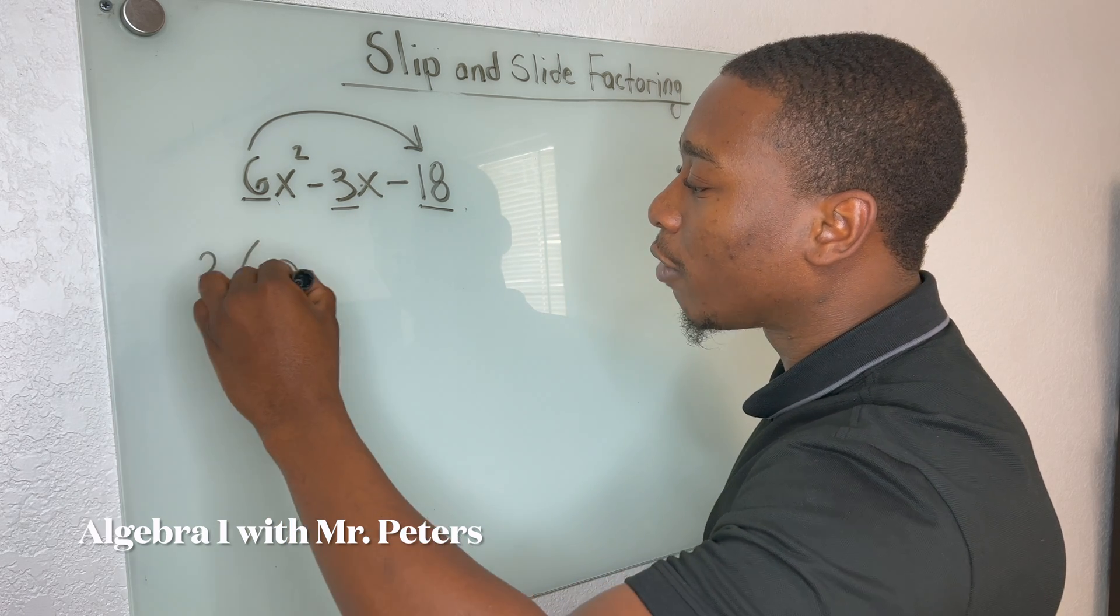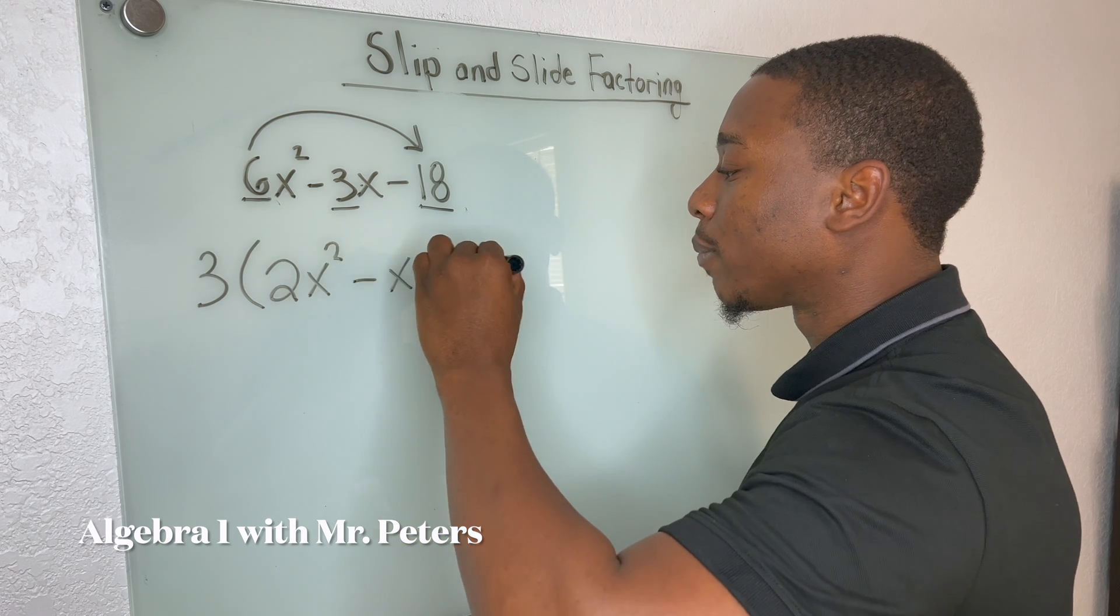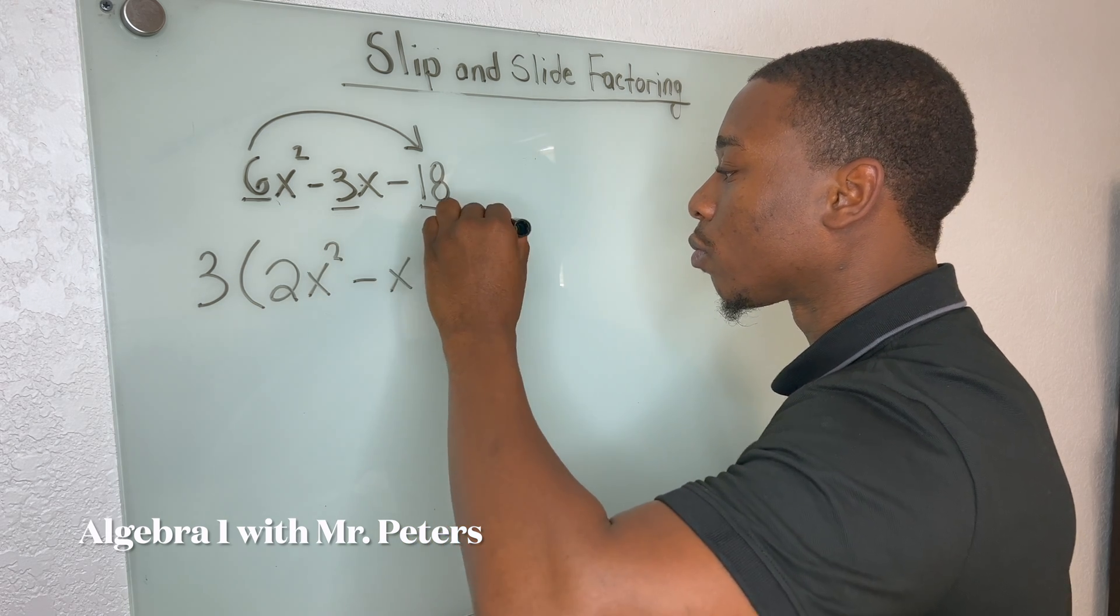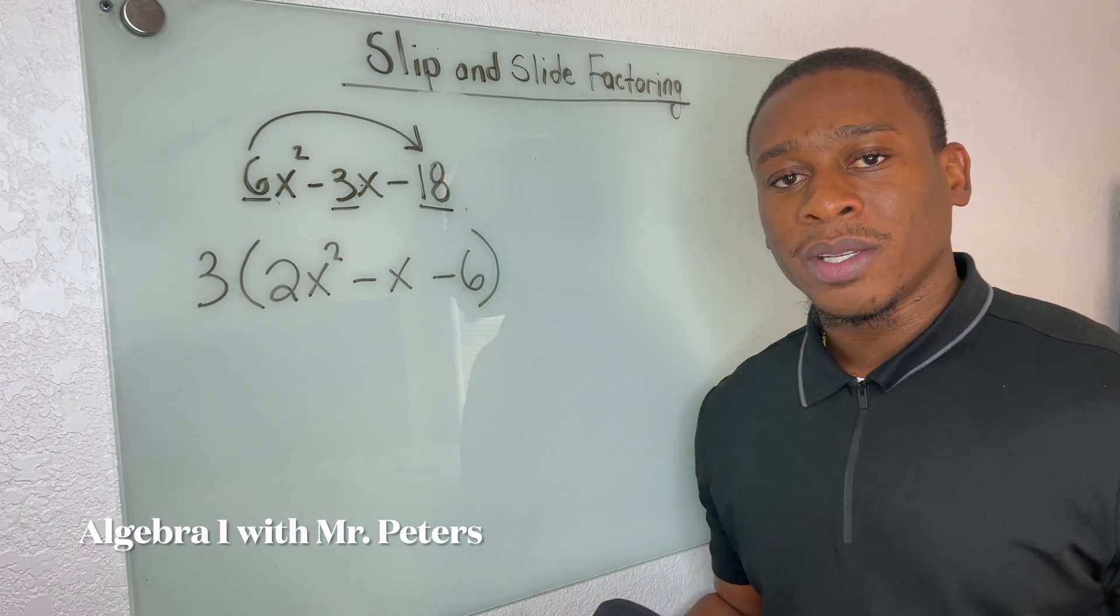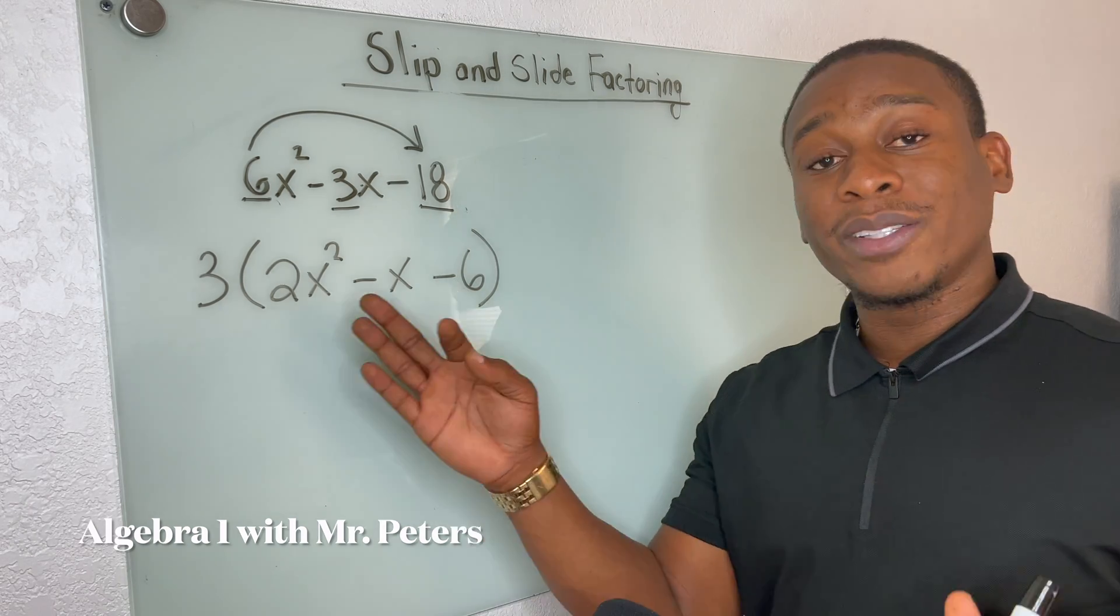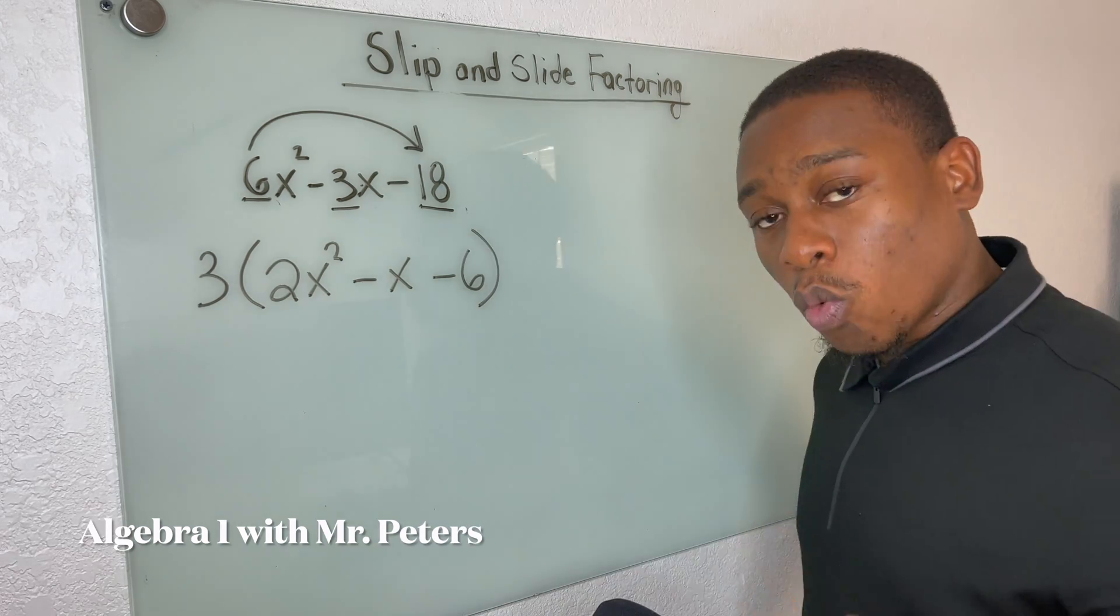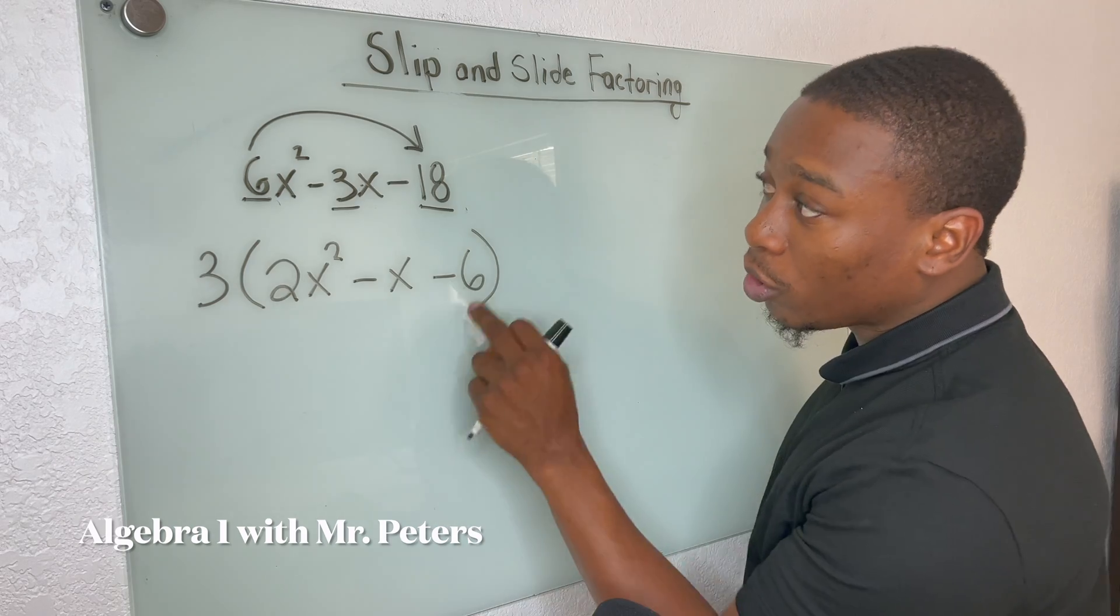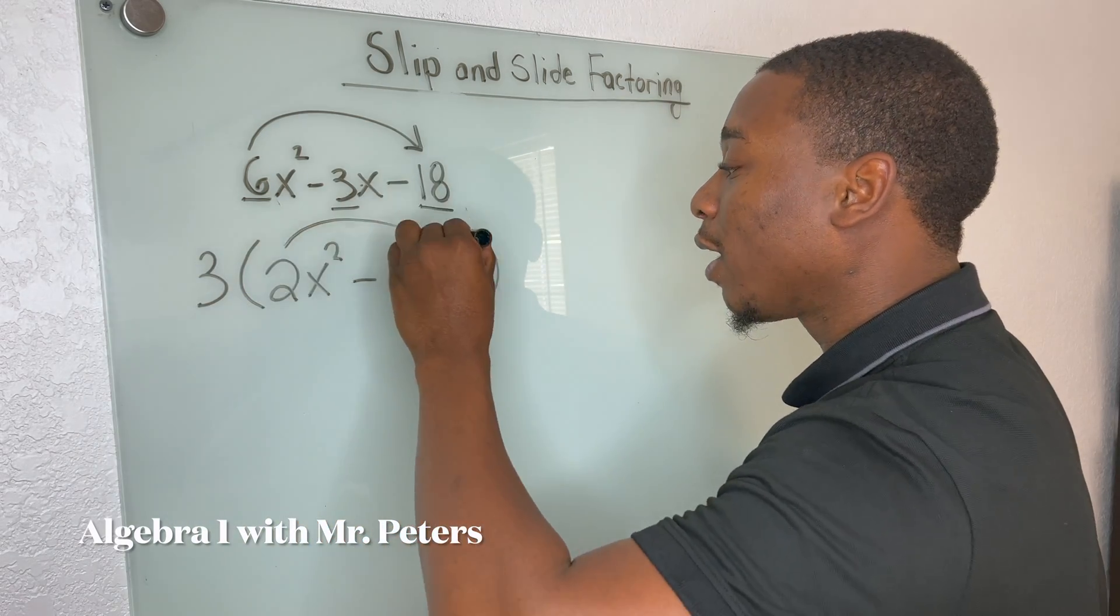And this problem does have one. So we pull our GCF of three. And now what we're going to have is two X squared minus X minus six. But even at this problem now, the issue is our lead term is still not just X squared.